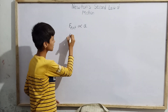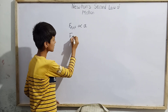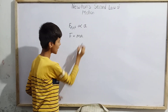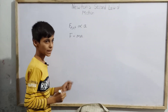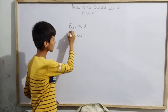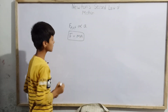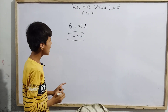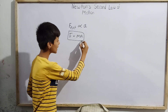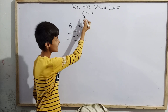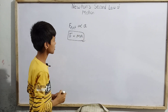The main formula for Newton's second law of motion is F equals MA, and this formula itself is known as Newton's second law of motion.